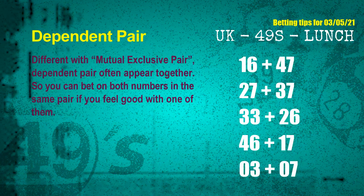Some numbers are mutual exclusive, some are dependent. Numbers in the same dependent pair you can bet on both, because they are often drawn in one draw. The dependent pairs for the next draw are: first pair 16 and 47; second pair 27 and 37; third pair 33 and 26; fourth pair 46 and 17; fifth pair 03 and 07.